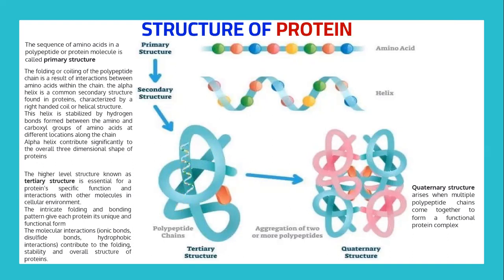The alpha helix contributes significantly to the overall three-dimensional shape of the protein. The higher-level structure known as the tertiary structure is very essential for the protein's specific function and interactions with other molecules in the cellular environment. The intricate folding and bonding patterns give each protein its unique and functional form. Molecular interactions like ionic bonds, disulfide bonds, and hydrophobic interactions contribute to the folding, stability, and overall structure of the protein. The quaternary structure arises when multiple polypeptide chains come together to form a functional protein complex.